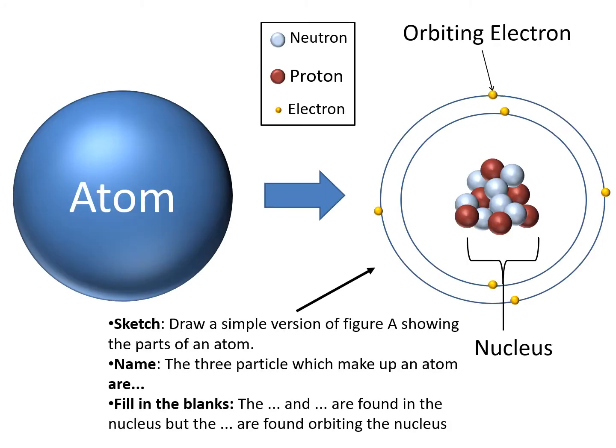So I'd like to start off by sketching a simple version of figure A as you can see at the top right there. Name the three parts which make up the atom and fill in the blanks here. The something and something are found in the nucleus but the something are found orbiting the nucleus. Pause the video before I move on.